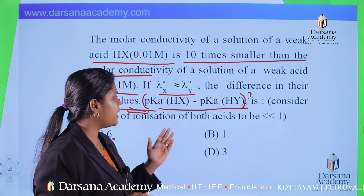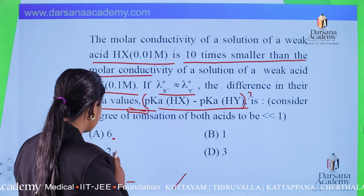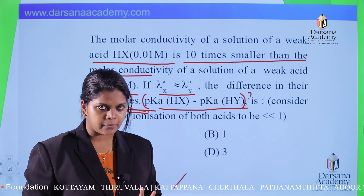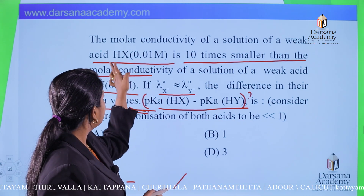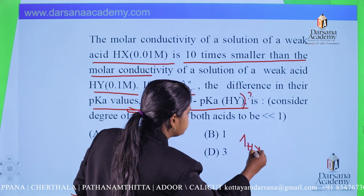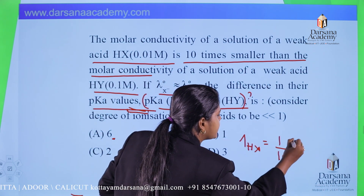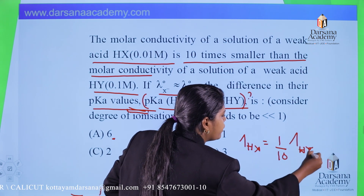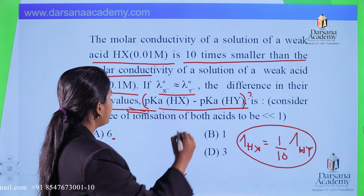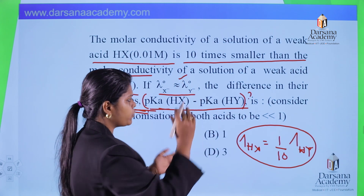Consider the degree of ionization of both acids is less than 1. The clue given is that λ(HX), the molar conductivity of HX, is 1/10 times λ(HY). Also given is that λ°(X⁻) is nearly equal to λ°(Y⁻).